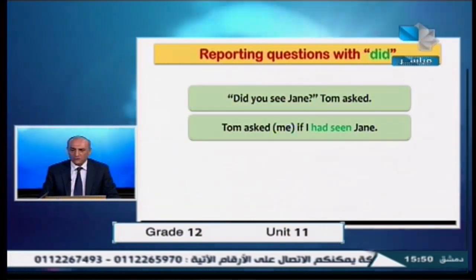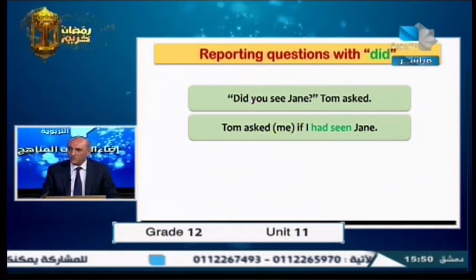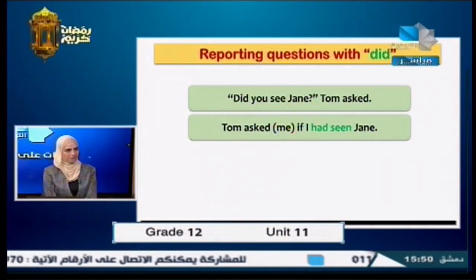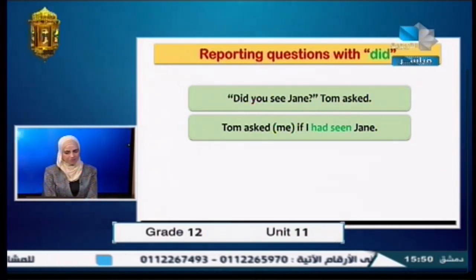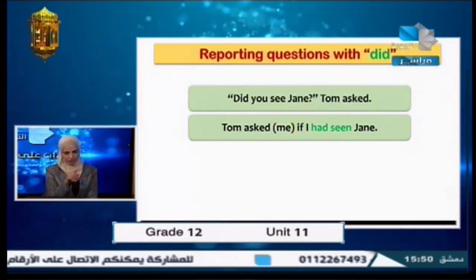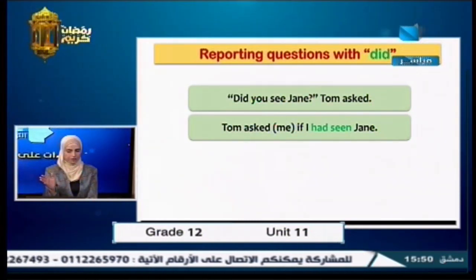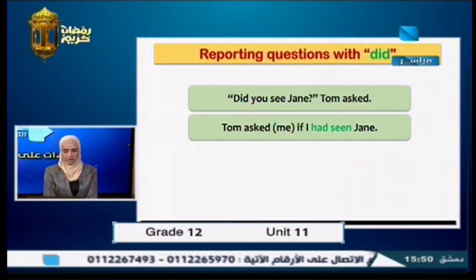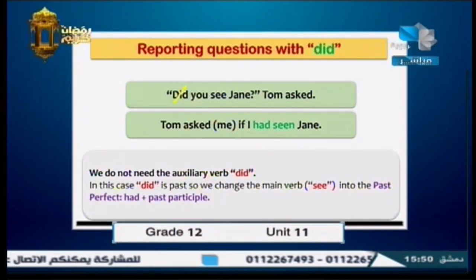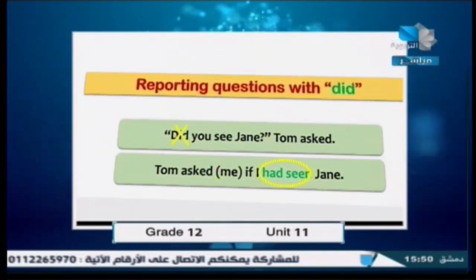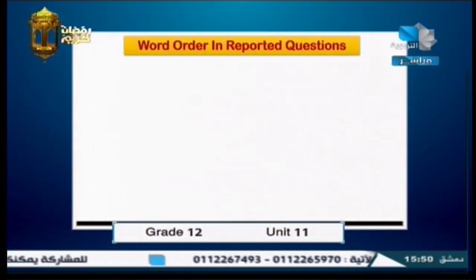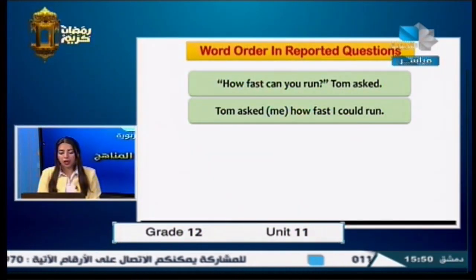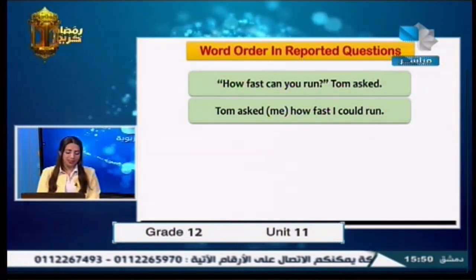For reporting questions with 'did': 'Did you see Jane?' — Tom asked me if I had seen Jane. We omit 'did' and put the main verb in past perfect. Word order in reported questions: speaker, then reporting verb in past, then question word (or 'if'), then subject, then verb in the correct tense. Example: 'How fast can you run?' — Tom asked me how fast I could run.